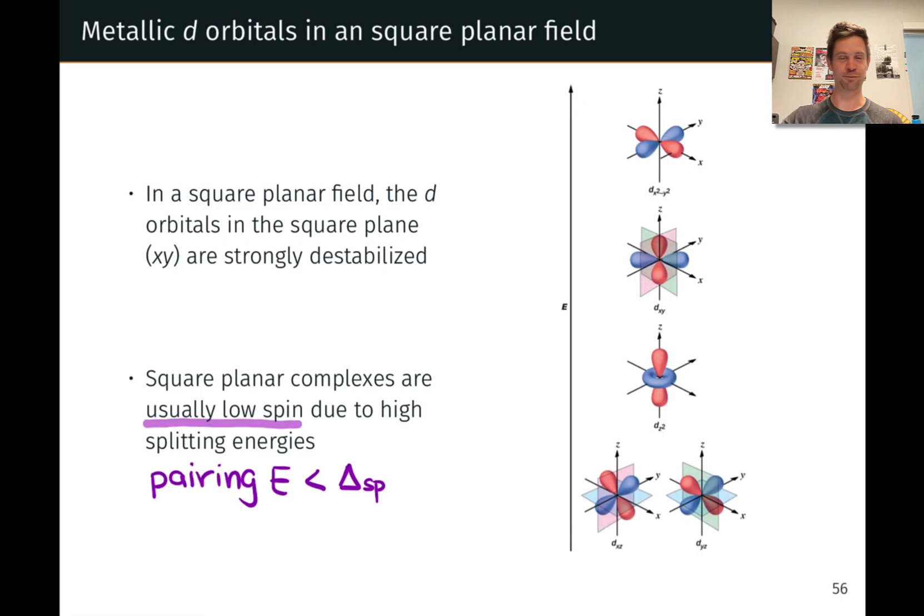So there's a sort of broadening out of the five d-orbitals into four levels, two lowest energy that are relatively unperturbed, more or less perpendicular to the square plane.